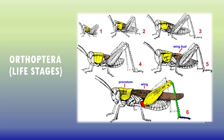From first to fifth instar and adult grasshoppers, note that only the adult has fully formed wings. All immatures have wing buds. As shown here, the second, third, fourth, and fifth instars all have wing buds, but only the final stage — the adult — has fully developed wings.